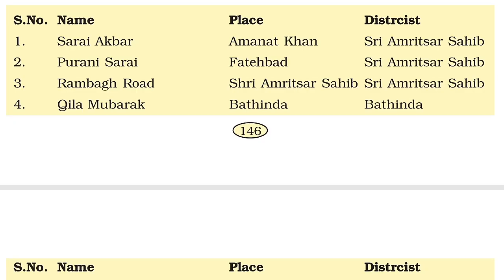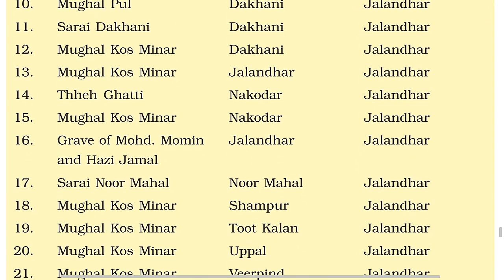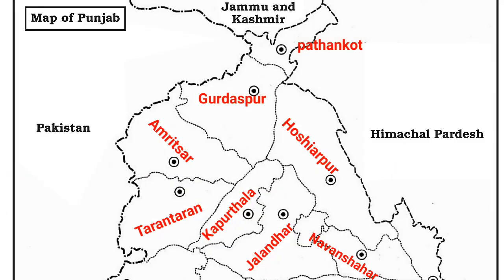Here we are given the map of Punjab. Let's read the names of the districts. Starting from the first: Pathankot, Gurdaspur, Amritsar, Tarantaran, Kapurthala, Jalandhar, Hoshiarpur, Nawanshahr.